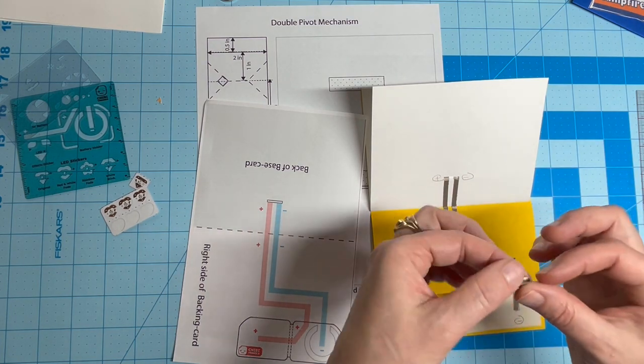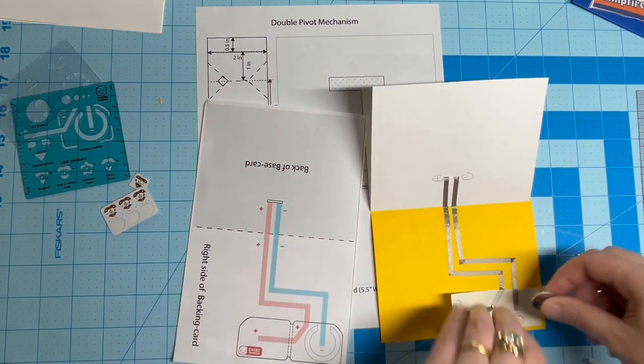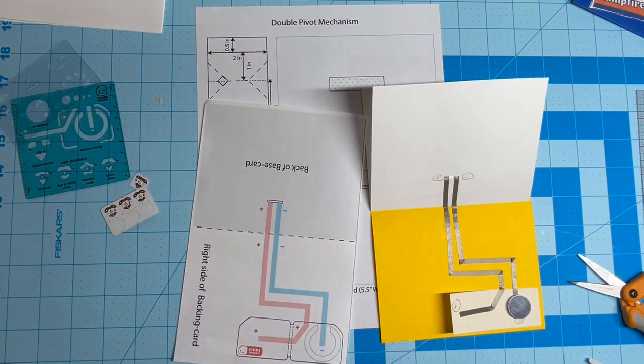Make a ball of conductive fabric tape to hold your battery in place, or if preferred you can use a foam ring if you have one.